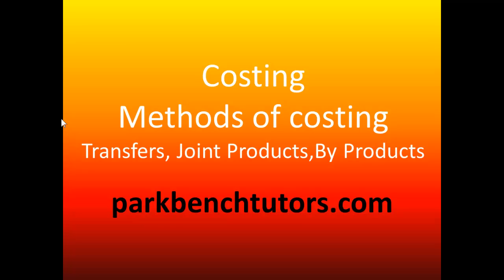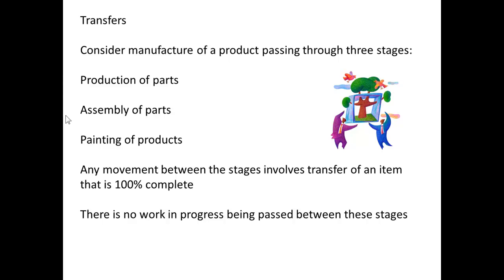We're going to look at methods of costing and consider transfers of joint products and by-products. Transfers are what happens when a product passes through distinct stages — for example, production of parts, assembly of parts, and painting of the products. You can treat those as three separate stages. Any movement between the stages involves transfer of an item that is 100% complete, so there is no work in progress passed between the stages.